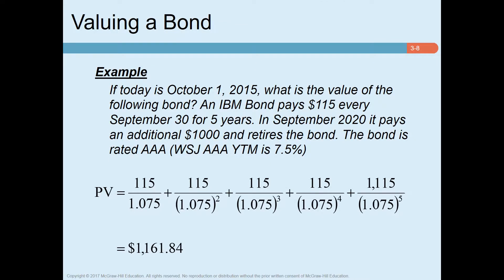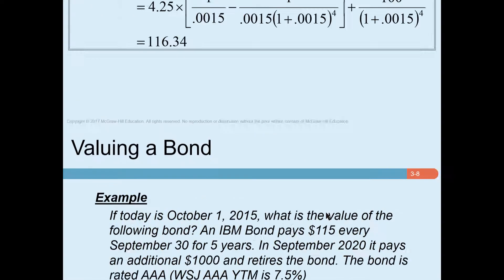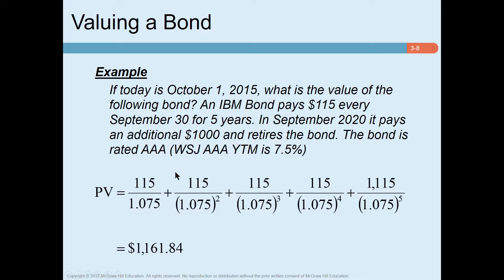Here is another example: if today is October 1, 2015, what is the value of the following bond? An IBM bond pays $115 every September 30 for five years; in September 2020 it pays an additional $1,000 and retires the bond. The bond is rated Triple-A with a YTM of 7.5%. So $115 is the coupon payment every year until year five, and in year five there is an additional $1,000 principal. Discounting at 7.5% and summing gives the bond's value. Alternatively, use the annuity formula: multiply 115 by the present value annuity factor, then add the present value of $1,000 — you should get the same result.